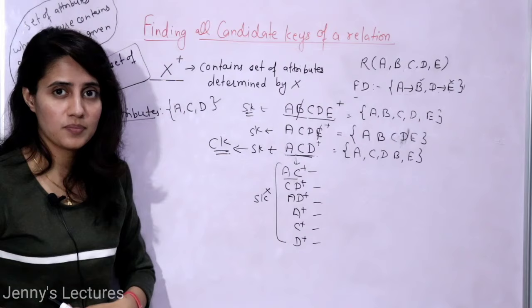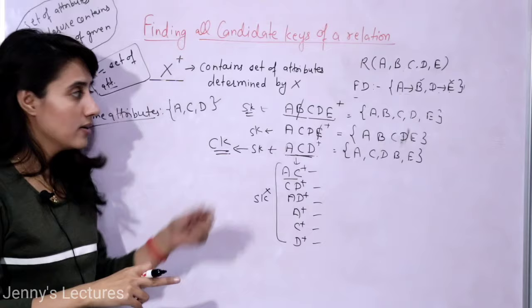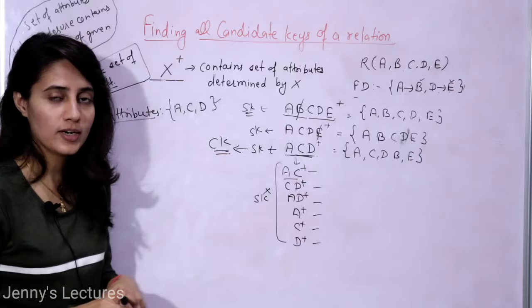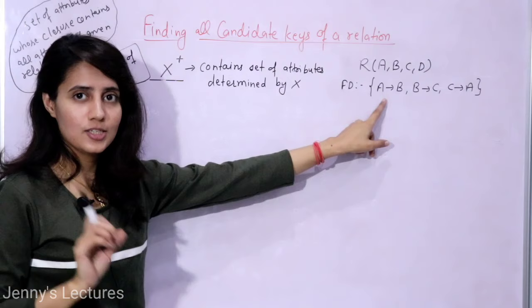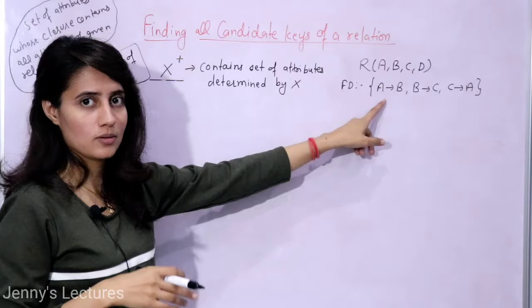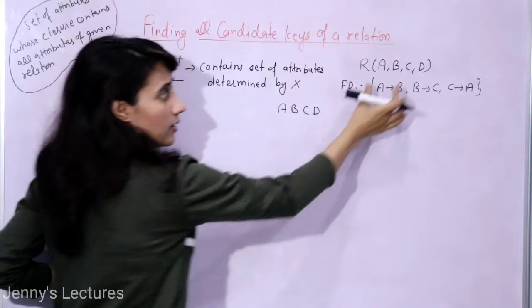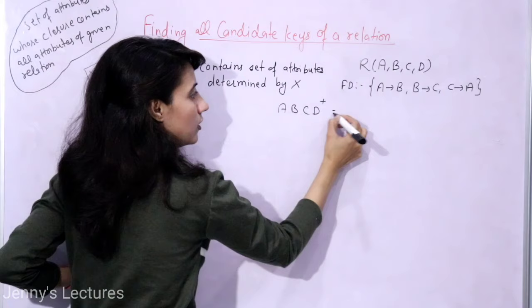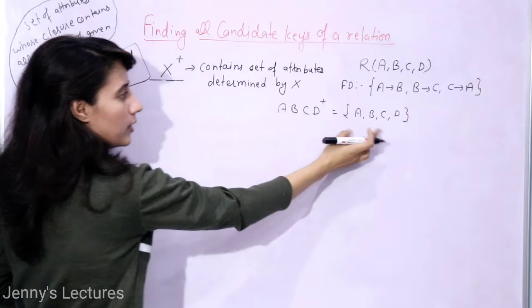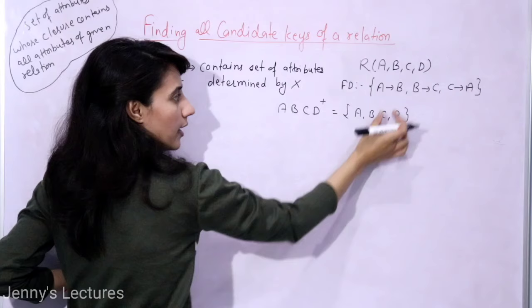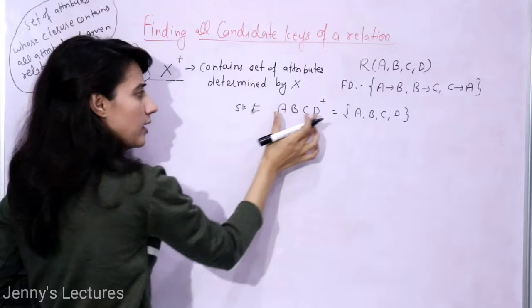Now let's take another example where prime attributes do appear on the right-hand side. Suppose we have a relation with attributes A, B, C, D and given functional dependencies. First step: take all attributes A, B, C, D — this is definitely a super key, since the closure gives all four attributes by reflexivity.